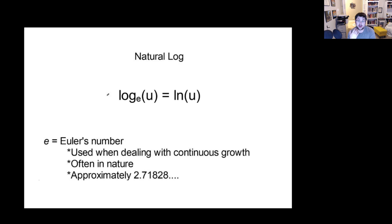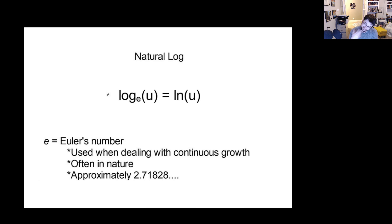E stands for Euler's number. It shows up in nature when dealing with continuous growth. It shows up in finance a lot, and other places as well, but it's about 2.7, and we'll see it a lot when we get to application problems.